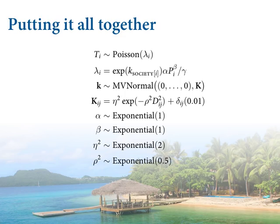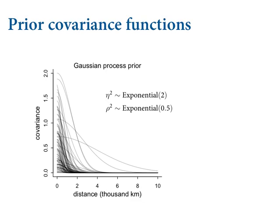We want to simulate from these priors to show what they imply. What does assigning exponential(2) and exponential(0.5) to these things mean? You sample random exponentials for eta-squared and rho-squared — remember the mean of an exponential is one over its rate, so if lambda is 2 the mean is 0.5, and the other has mean 2. Then plug into the K_ij function to get covariance declining with distance. Plotting 50 samples from the prior, you can see most fall off very rapidly. This prior says there's probably not much contamination — it's a weak prior, and the posterior will look really different.